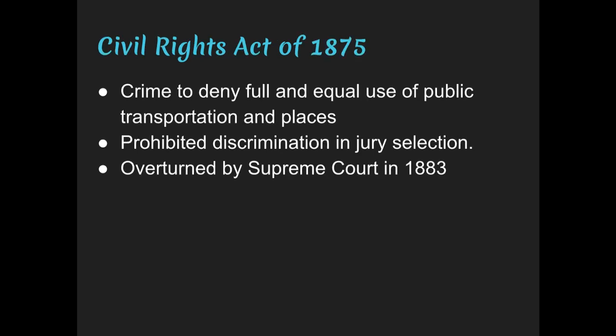The Civil Rights Act of 1875 made it a crime for any individual to deny full and equal use of public conveyances and public places such as hotels, trains, railroads, theaters, and restaurants, and prohibited discrimination in jury selection. However, it had no strong enforcement mechanism. Northerners were dismayed when it was overturned by the Supreme Court in 1883, and they would not really try another Civil Rights Act for almost 90 years.